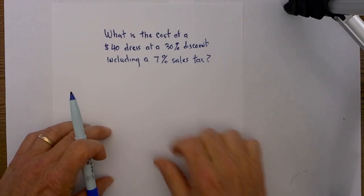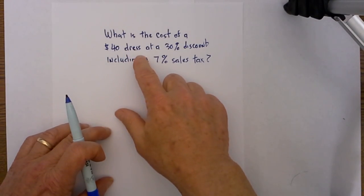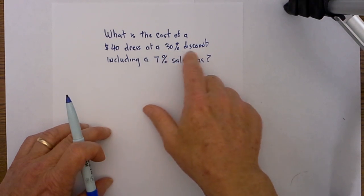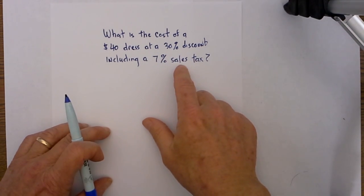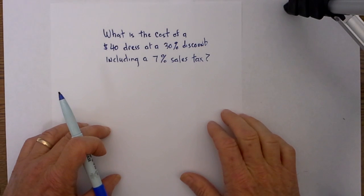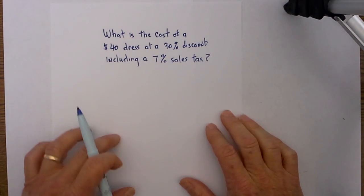Let's answer this question. What is the cost of a $40 dress at a 30% discount including a 7% sales tax? In order to answer this, we will have a two-part question.